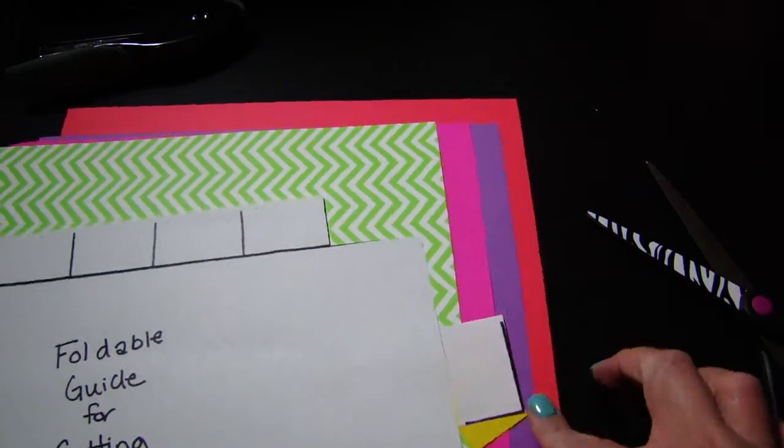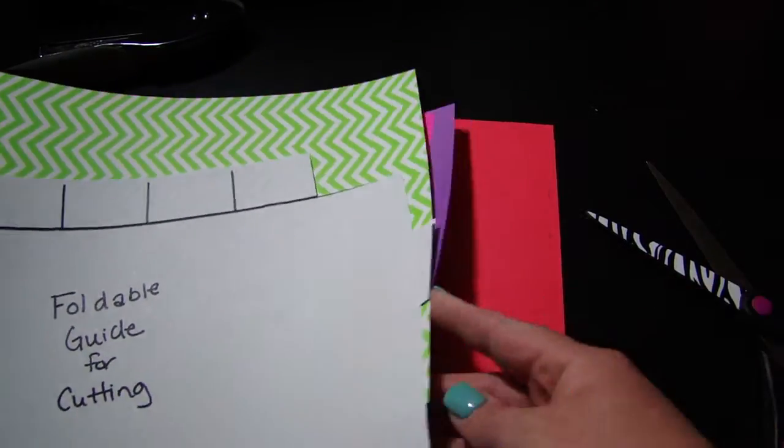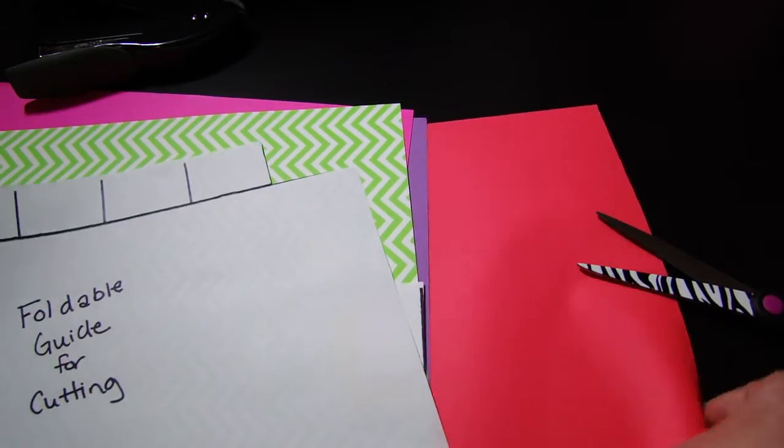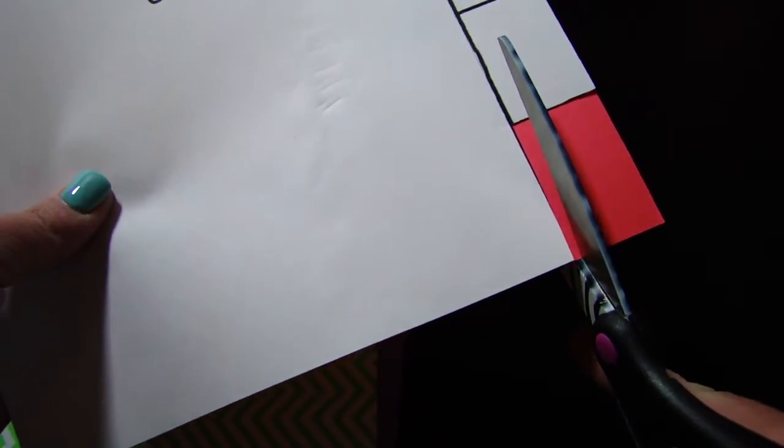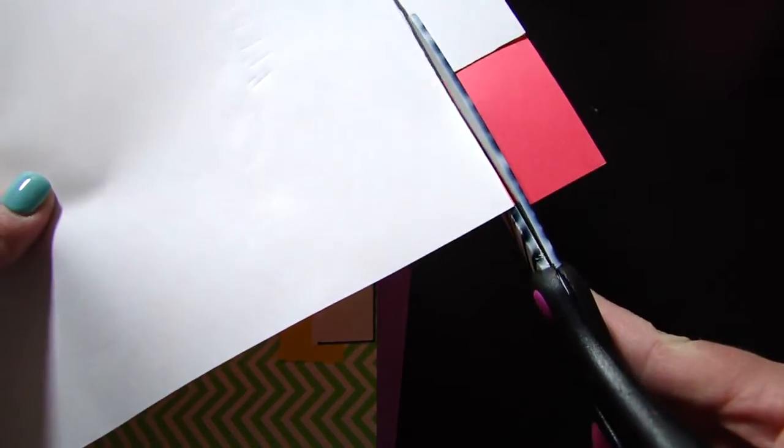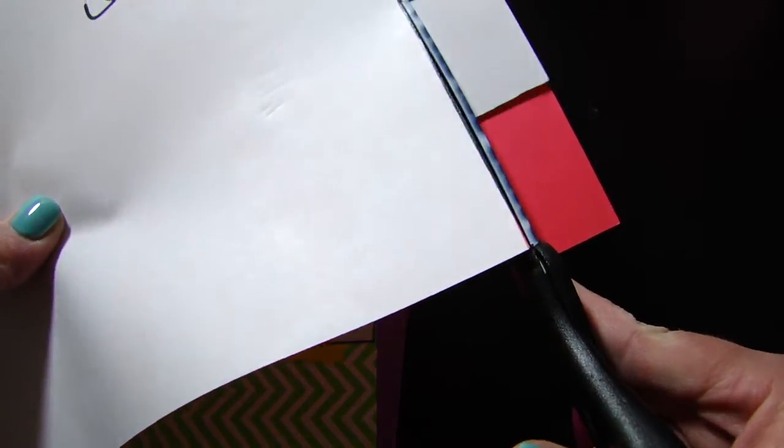The next piece I'm going to do is this orangey reddish color. I'm going to line it up and I'm going to go ahead and cut this first red part off as well as this piece right here. Okay, so now we have a piece that looks like this.